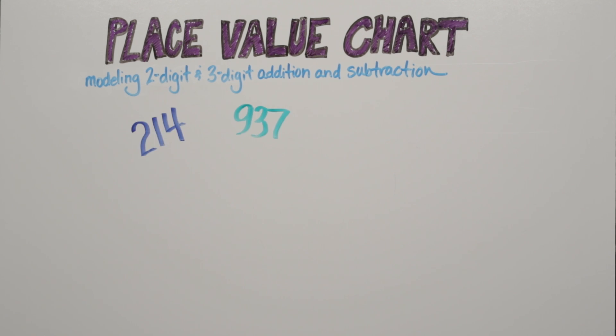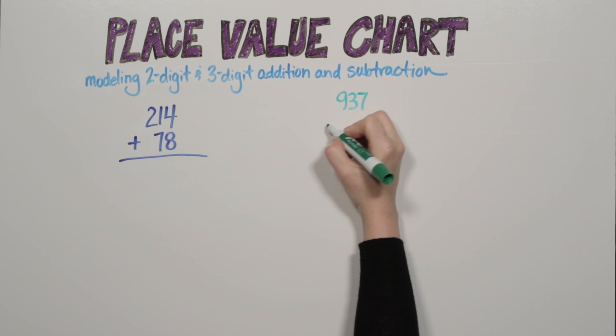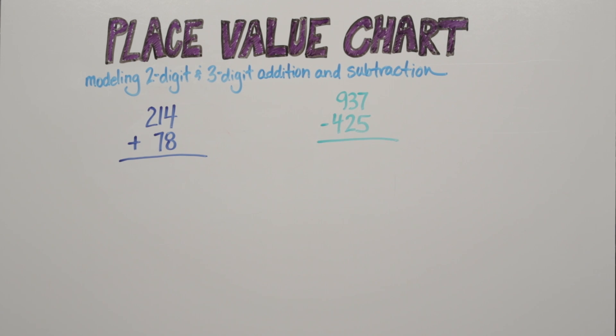Becoming comfortable with two-digit and three-digit numbers is an important skill in second grade. Your child will master addition and subtraction problems within 1,000. But how your child learns to understand addition and subtraction is very important. Here's how you can help.